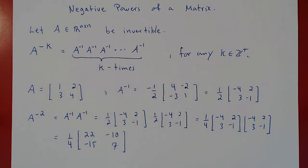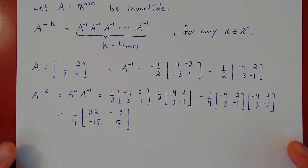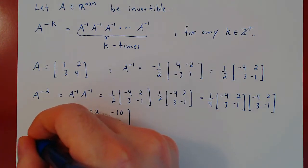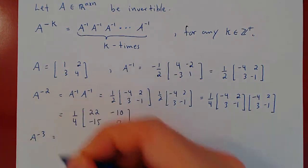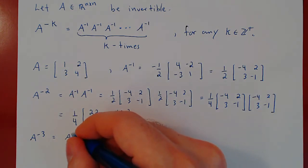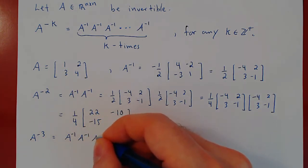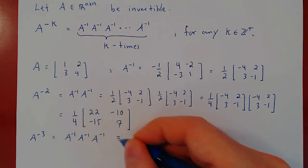So, there you have it. This is A to the negative 2. And if you wanted A to the negative 3, well, you could do, of course, A inverse times A inverse times A inverse, start from scratch, or you can do much better.